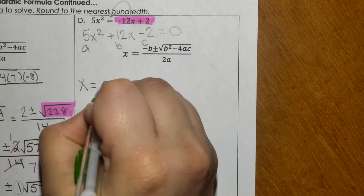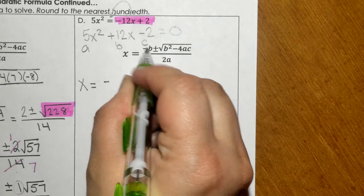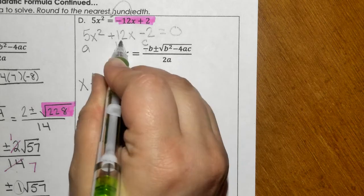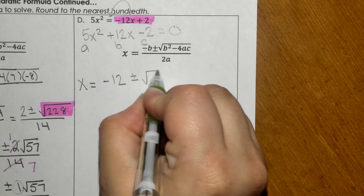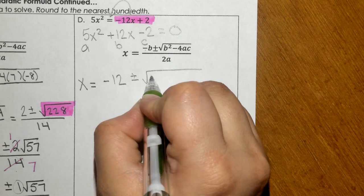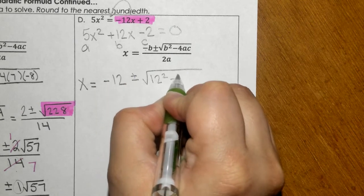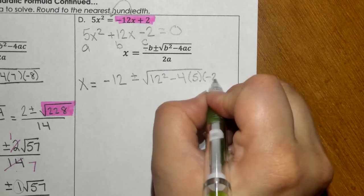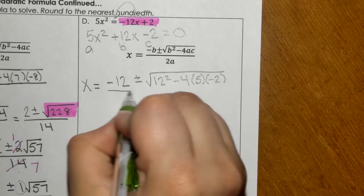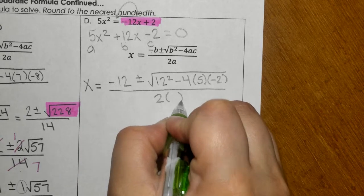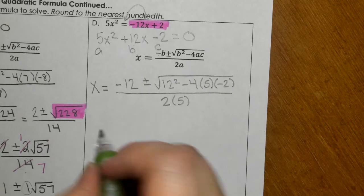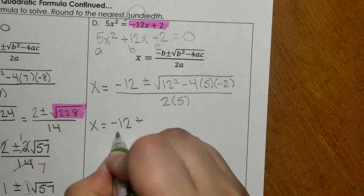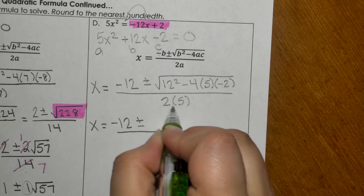So negative from the formula. And then 12 is positive this time. So I've got a negative 12 plus or minus B squared, which would be positive 12 squared, minus 4 times 5 times C, which is negative 2, all divided by 2 times A, which is 5. So now we have our negative 12 plus or minus that 10 at the bottom.